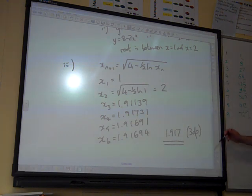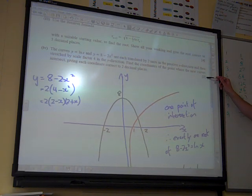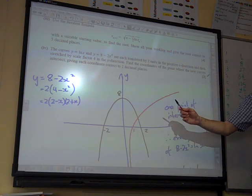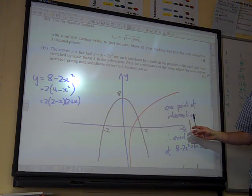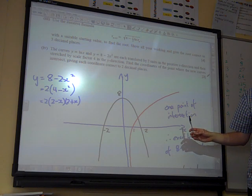Giving each coordinate correct to 2 decimal places. Right. So what we've been told here, this graph, both of the graphs, have been translated 2 units in the positive x direction.